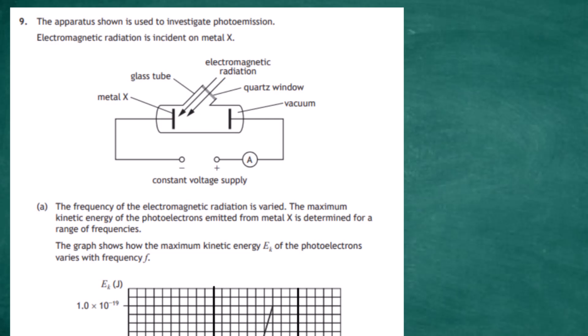Question 9 from Section 2 of the 2022 Higher Physics examination from the SQA. The apparatus shown is used to investigate photoemission. Electromagnetic radiation is incident on metal X, and you can see in the diagram the electromagnetic radiation passes through a special quartz window onto metal X.